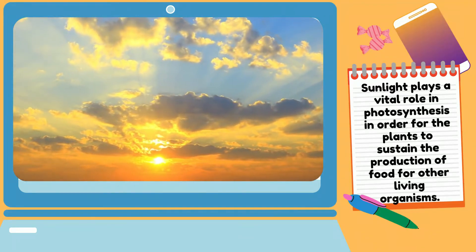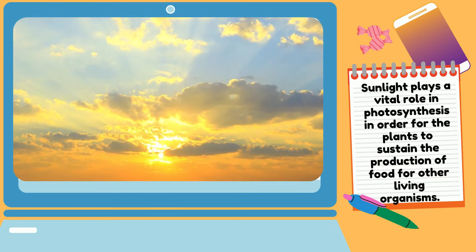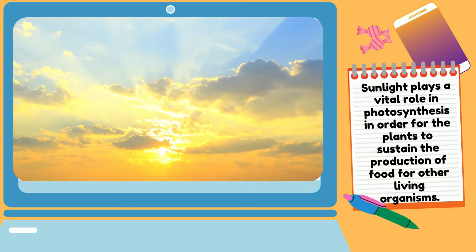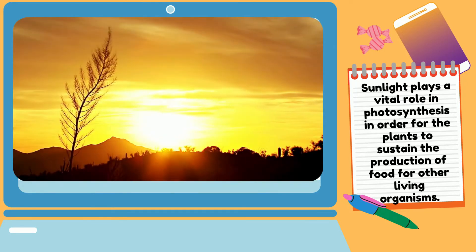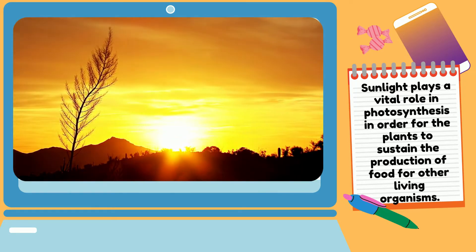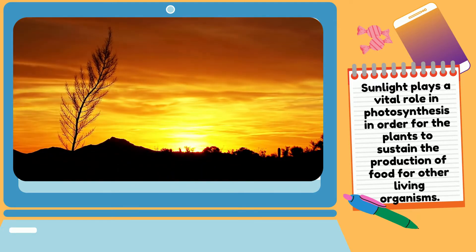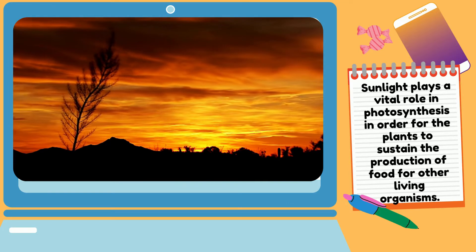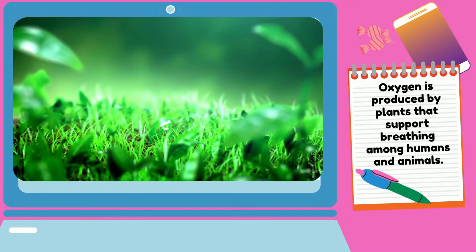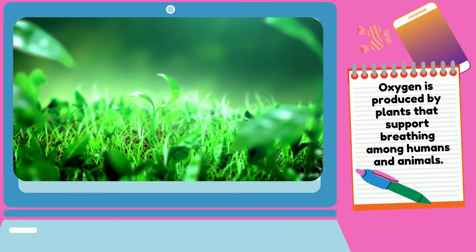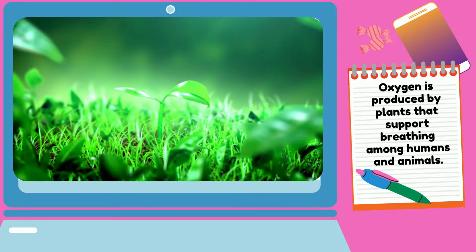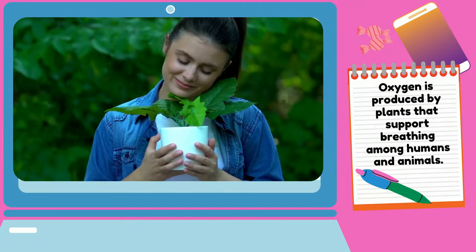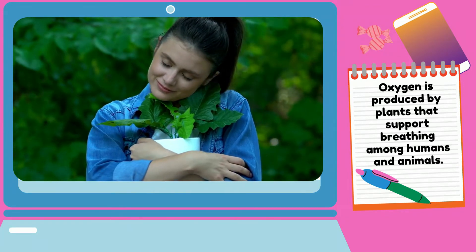Sunlight is another necessary abiotic factor in an ecosystem. It plays a vital role in photosynthesis in order for plants to sustain the production of food for other living organisms. Without this factor, few organisms will be able to survive. Oxygen is also an abiotic factor produced by plants that supports breathing among humans and animals. It also helps decompose decaying matters around us.